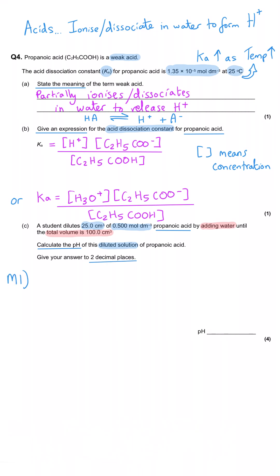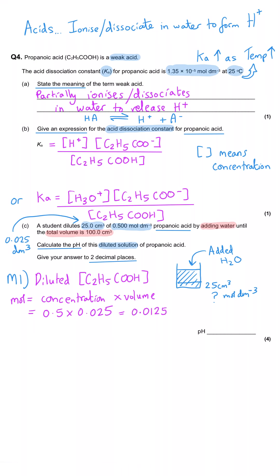The first thing that we need to do is calculate the new diluted concentration of propanoic acid, because it was 0.5 moles per decimetre cubed, but now it's going to be smaller than that because we've added water to it. And so, we need to use the moles equals concentration times volume expression, and the volume was 25 cm3, so that needs to be 0.025 multiplied by 0.5,